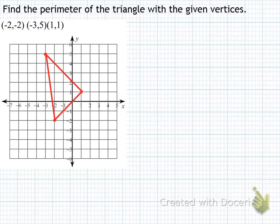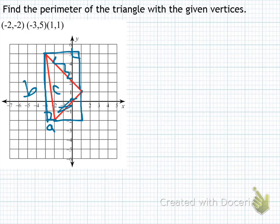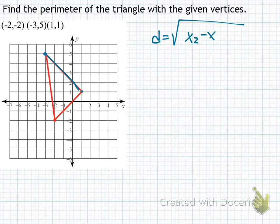To find each side length, they could use the Pythagorean theorem — for example, creating a right triangle for a given side and using A, B, and solving for C. They would have to do that three times, once for each side. The way I chose to walk through it, and the way a lot of students solved this, is using the distance formula: the square root of (x2 minus x1) squared plus (y2 minus y1) squared. We can use this to find the length of any segment.